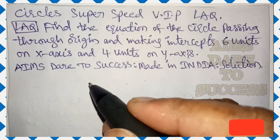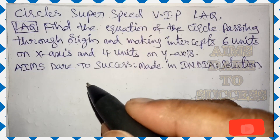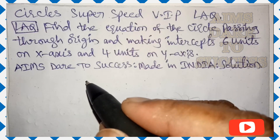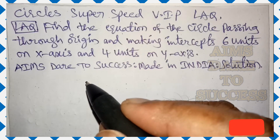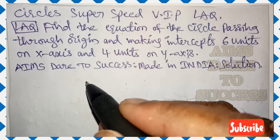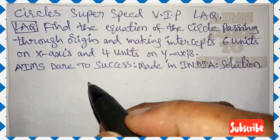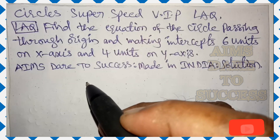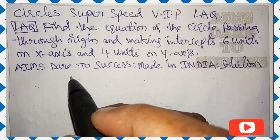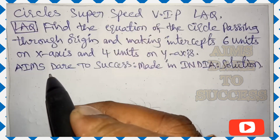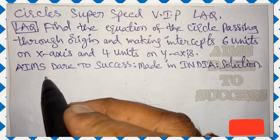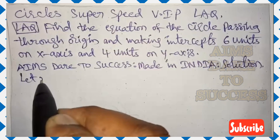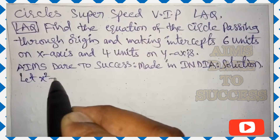Hi, hello, namaste my dear students and friends. Welcome to our channel Aims Dare to Success. Today I am going to discuss with you circles — a super speed, very important previous VIP long answer question. Today our question is: find the equation of the circle passing through the origin and making intercepts of six units on the x-axis and four units on the y-axis. Solution — made in India.